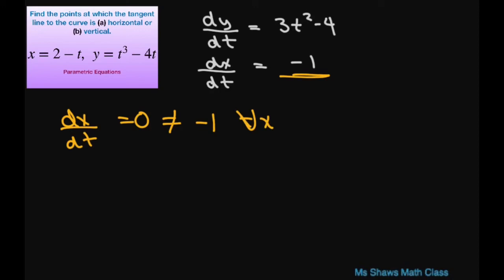This upside down A means for all. This makes it easier, for all x. So there's no points where the tangent line is vertical.